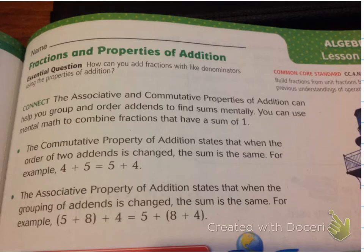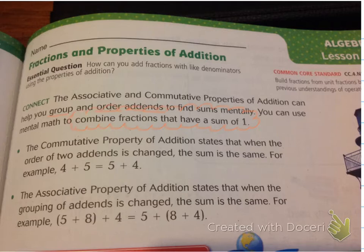The associative and commutative properties of addition can help you group and order addends to find sums mentally. You can use mental math to combine fractions that have a sum of one. This is our goal today — look to combine fractions that have a sum of one. Please write this down. This is going to make our lives so much easier when adding large fractions.